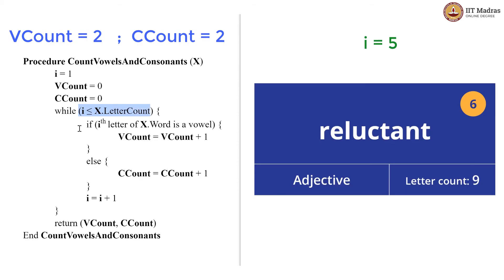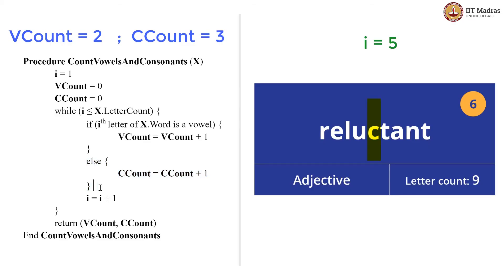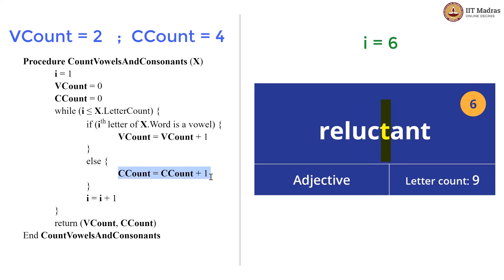5 is less than 9, so we go inside and check if the fifth letter of the word 'reluctant' is a vowel. It is not, so we go to the else block where we increment c_count to 3, then increment i to 6. 6 is less than 9, so we check if the sixth letter of x dot word is a vowel. The sixth letter is 't', it is not a vowel, so we go into the else block and increment the consonant count to 4.